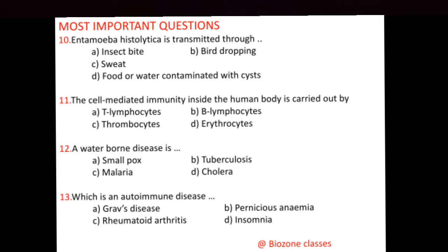Question number 11: Cell-mediated immunity inside the human body is carried out by — T lymphocyte, B lymphocyte, thrombocytes, or erythrocyte. T lymphocytes are responsible for cell-mediated immunity, whereas B lymphocytes are responsible for humoral immunity because B lymphocytes are mainly involved in antibody production.